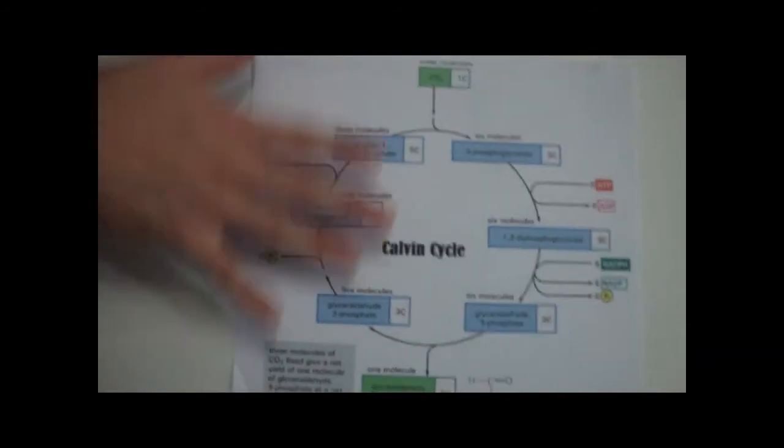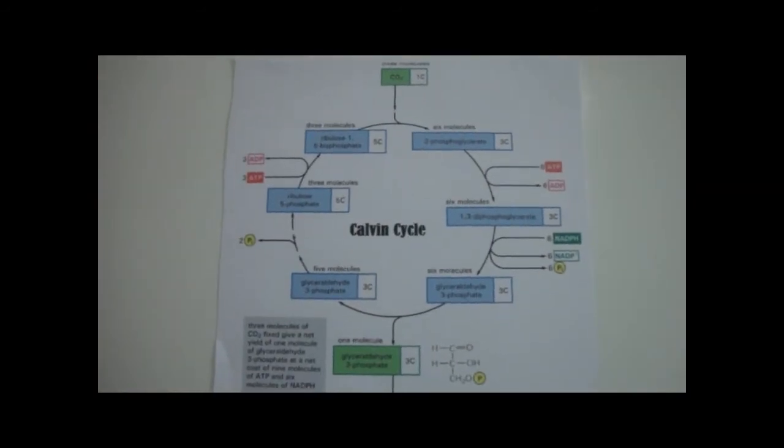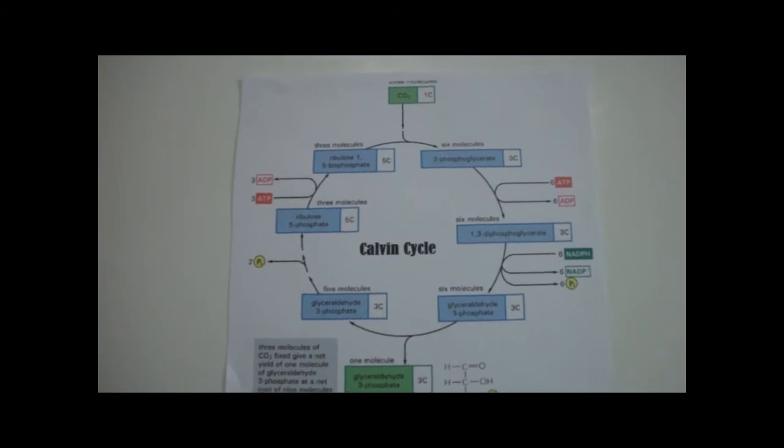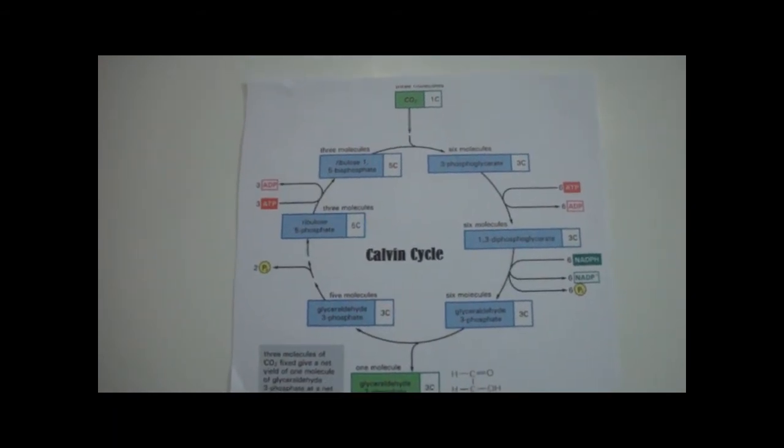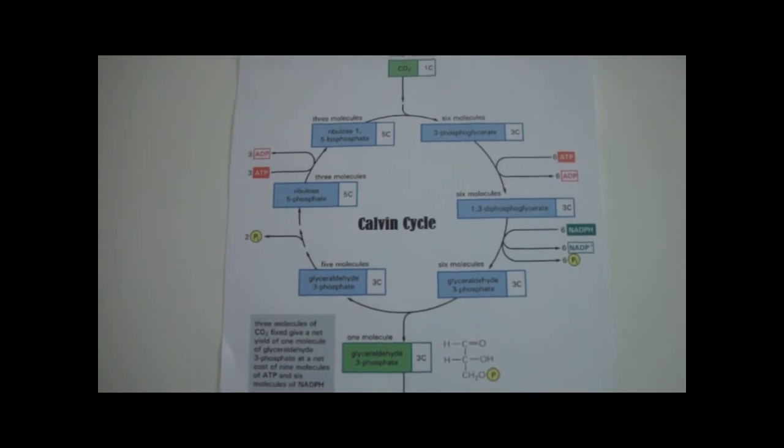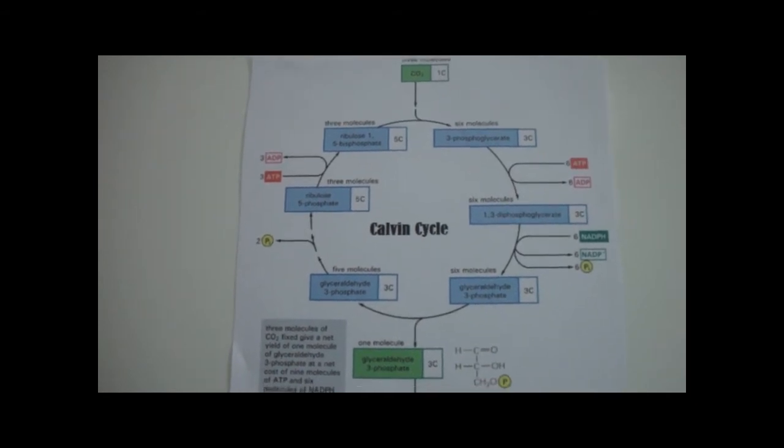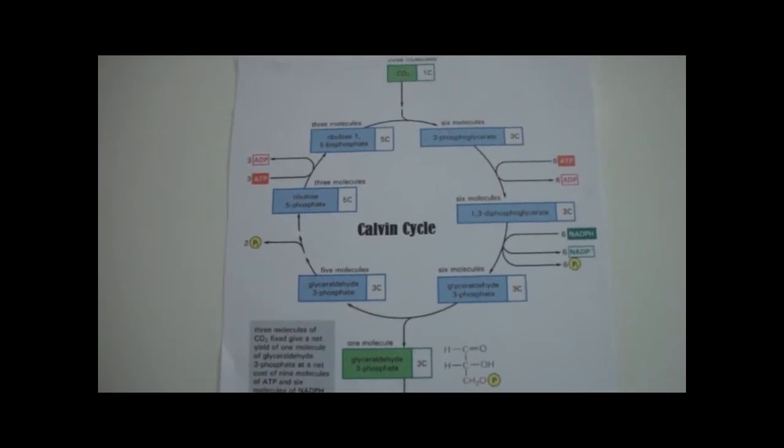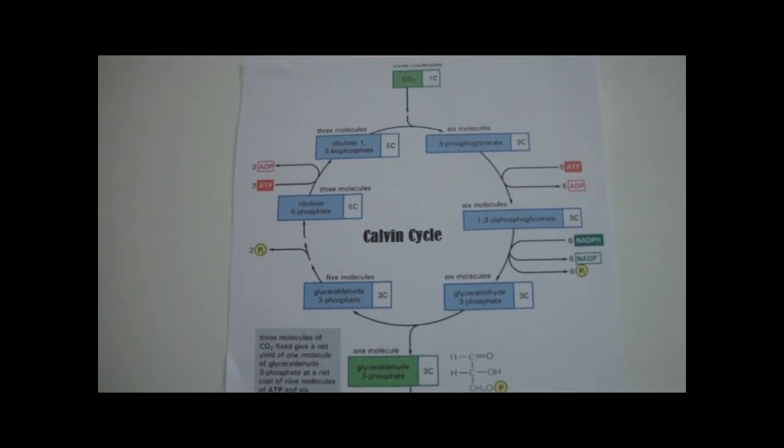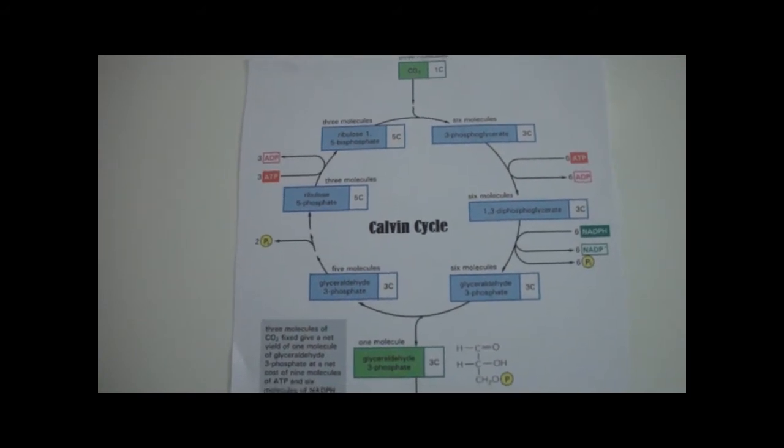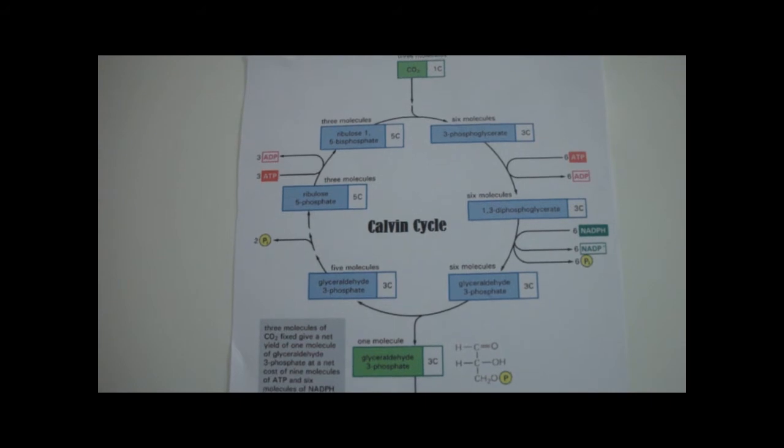Unlike light reactions, the Calvin cycle does not need light to function, nor does it produce energy. Note that while it is sometimes referred to as the dark reactions, most of the activities of the Calvin cycle take place during the day. It is actually an anabolic process that utilizes the ATP and NADPH produced from light reactions in order to build sugar.